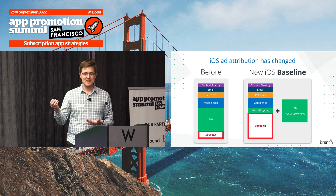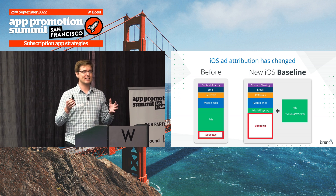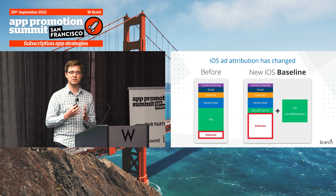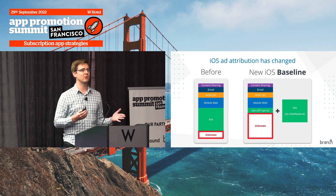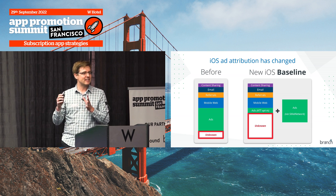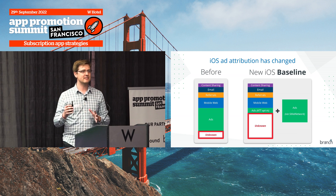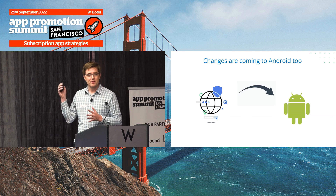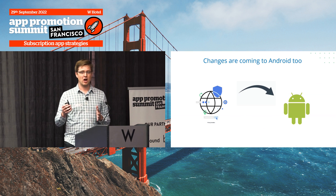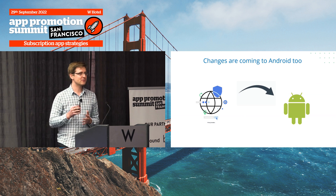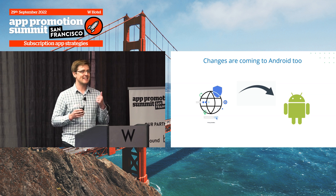When we look at ad measurement, in the past everything was nice and simple — you could combine everything and understand what was going on. But on iOS in particular, that's not possible anymore. SKAdNetwork messes everything up, and it's living off in its own silo. Similar changes are coming on Android, though they are not going to be as severe. I'm going to spend most of the time today talking about SKAdNetwork, because that is the train coming down the tracks more quickly.